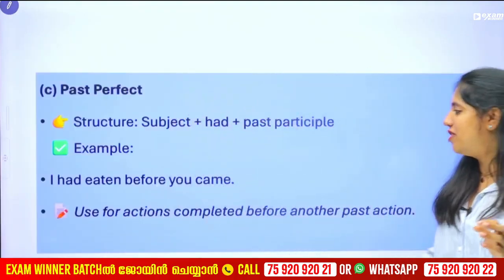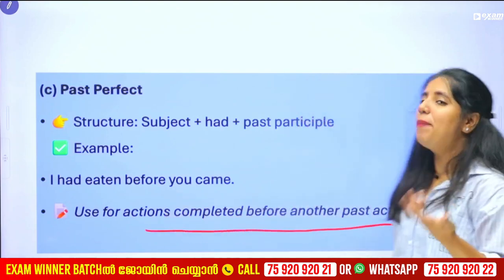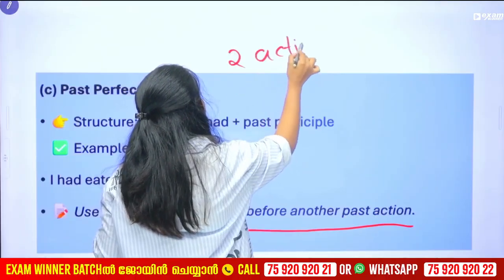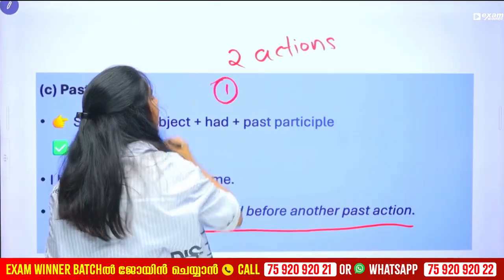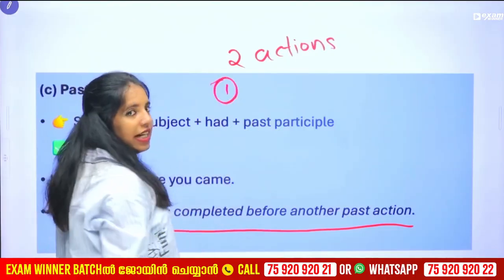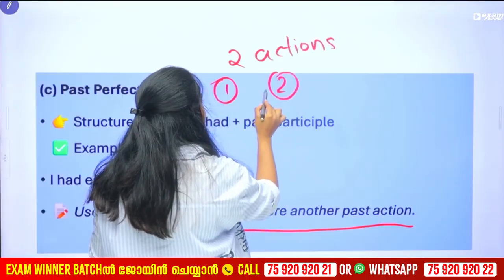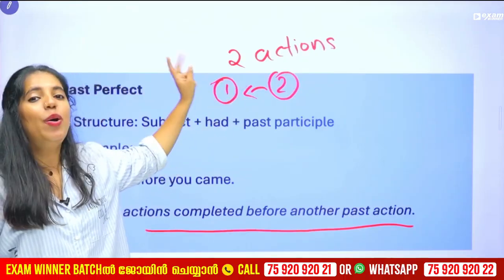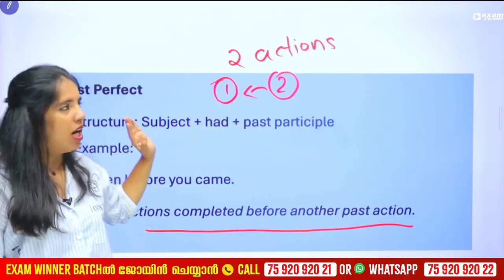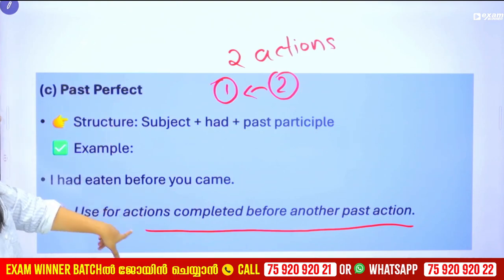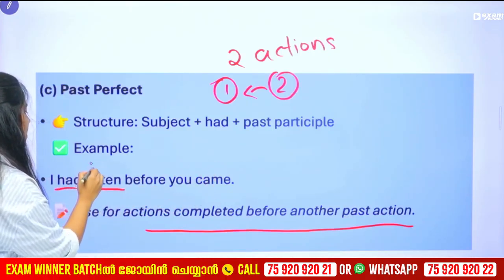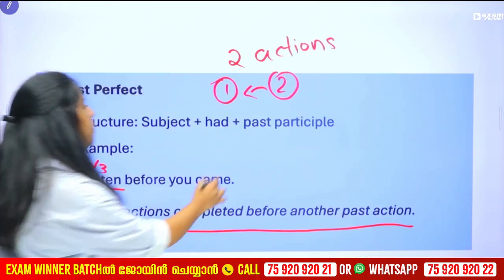Past perfect — actions completed before another past action. There are two events. One action is completed before the other. The structure is 'had' plus V3 form. For example, I had eaten before you came. This is the V3 form — past participle.